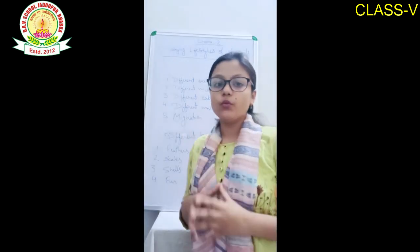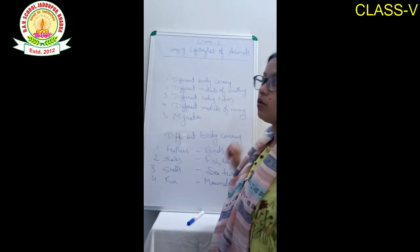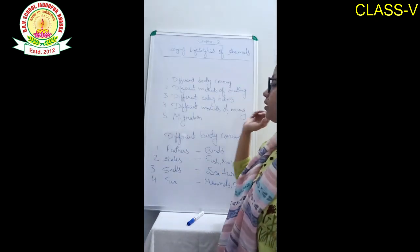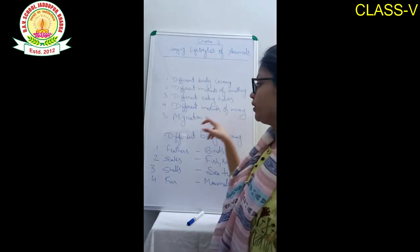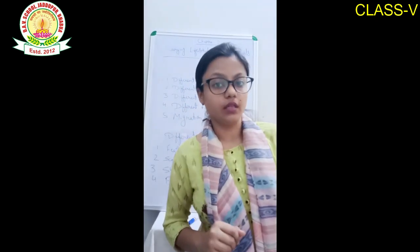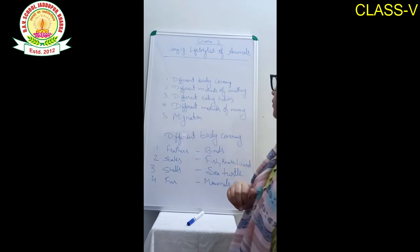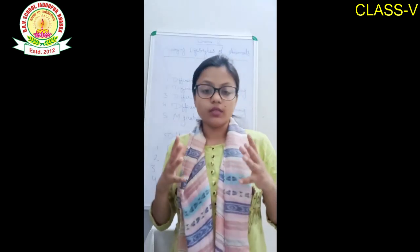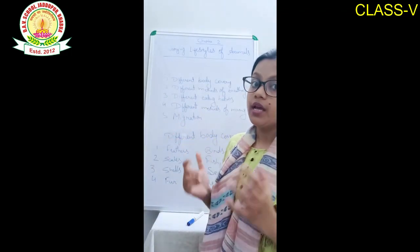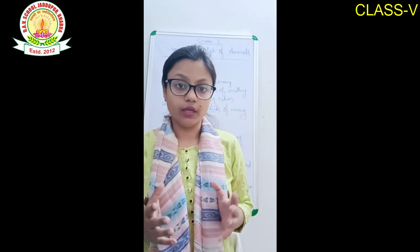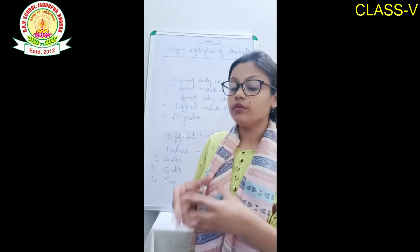In this chapter, we are going to discuss different topics: first, different body coverings of animals; second, different methods of breathing; third, different eating habits; fourth, different methods of moving; and the last topic is migration. Today we are going to discuss the first topic — different body coverings. The outer layer used for protection is called body covering.